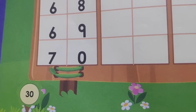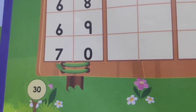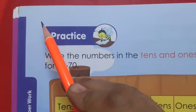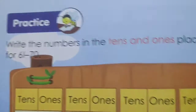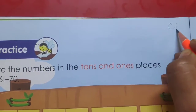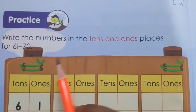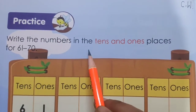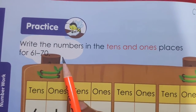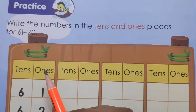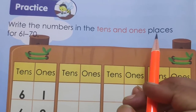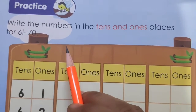So children, this is the page, page number 30. On the top of the page, on the left side, first you have to mention today's date. And on the right side, you have to write CW for classwork. Write the numbers in the 10s and 1s places for 61 to 70. On this page, you have to write the numbers in the 10s and 1s places for 61 to 70.